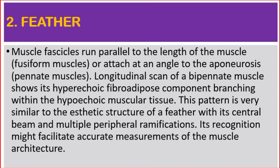Number two: feather. Muscle fascicles run parallel to the long axis of the muscle in fusiform muscles, or attach at an angle to the aponeurosis. Longitudinal scan of a bipennate muscle shows its hyperechoic fibroadipose component branching within the hypoechoic muscular tissue. This pattern is very similar to the aesthetic structure of a feather with its central beam and the multiple peripheral ramifications.